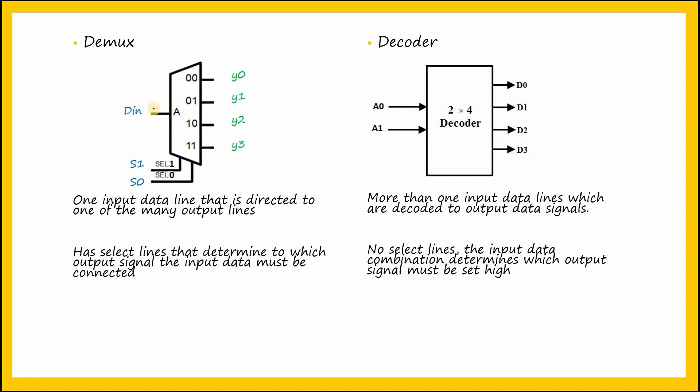Also, you can see that demultiplexer has select lines, while there are no select lines in the decoder. For a demultiplexer, the select lines determine to which output signal the input data must be connected. Whereas in a decoder, there is no need for select lines as the input data combination itself determines which output signal must be set high.